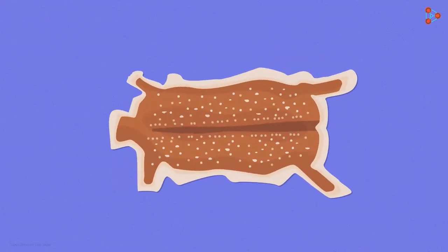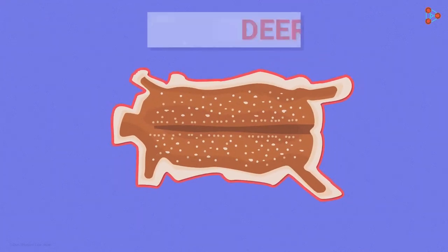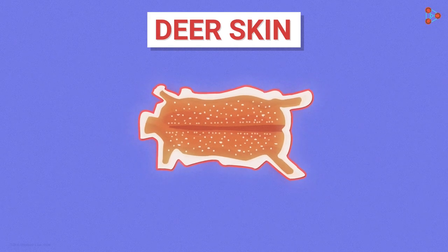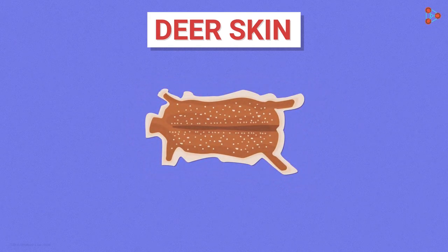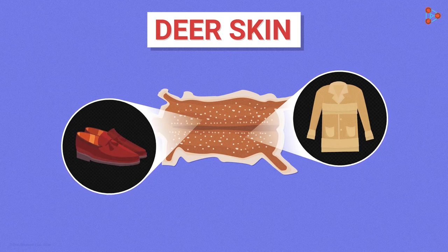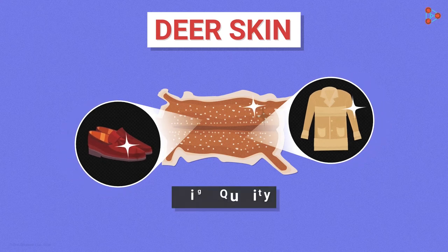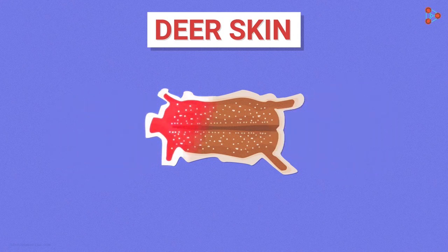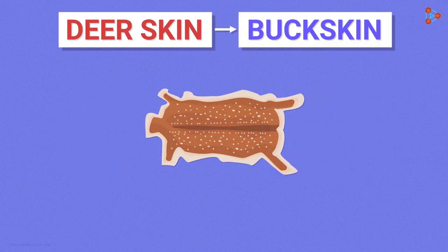In some parts of America, deer skin was one of the most highly valued commodities. This was usually due to its usefulness in clothing and moccasins, and also because of its high quality. Therefore, trade was usually carried in the form of deer skin, which was referred to as buck skin.